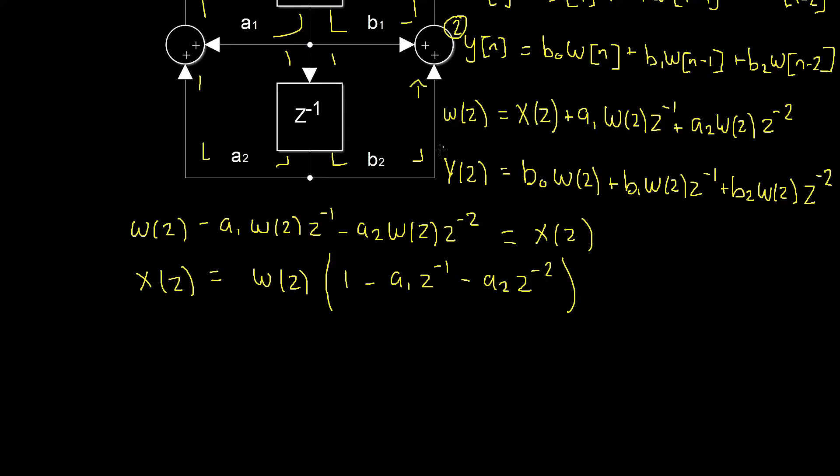We can do the same with our y equation, which will give us y of z is equal to w of z, and then inside the brackets b0 plus b1 z to the power of negative 1 plus b2 z to the power of negative 2. Excellent, so we're making a lot of progress. Now we have w of z in both of our equations, and now we can cancel them out nicely to calculate our h of z. Let's do that now.